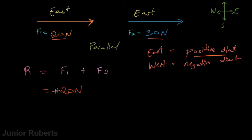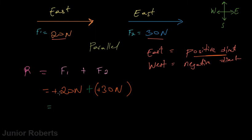We add that to our F2 vector, which has a magnitude of 30 newtons. This vector is also going to the east, and east is our positive direction, so we put a positive sign here. For simplicity, since a vector with no sign is understood to be positive, we can drop the positive signs and write 20 newtons plus 30 newtons.